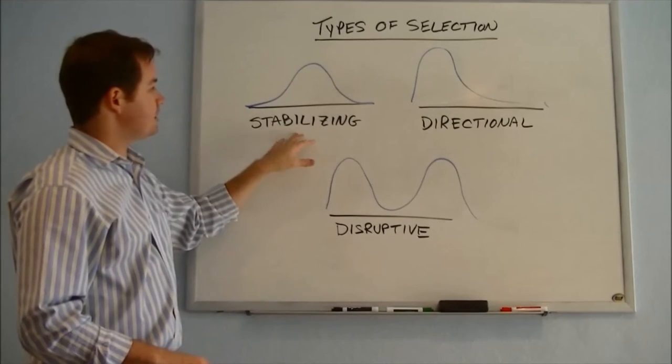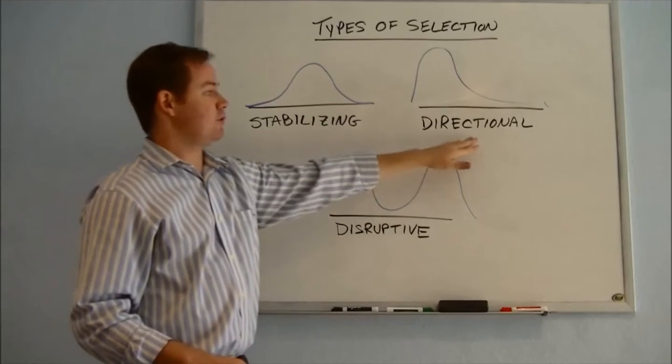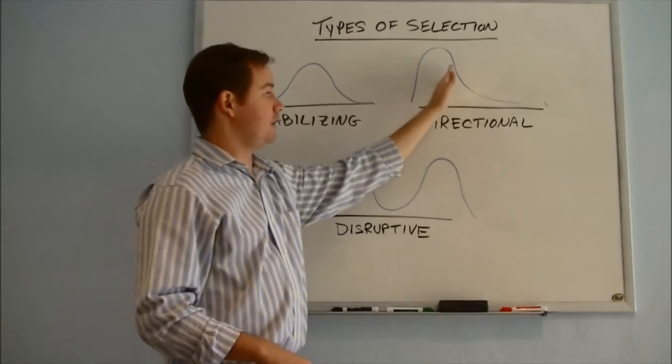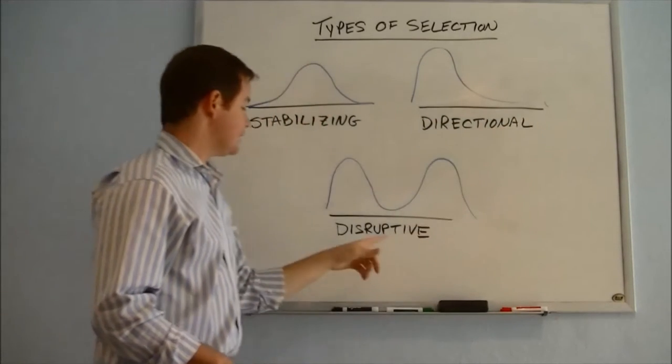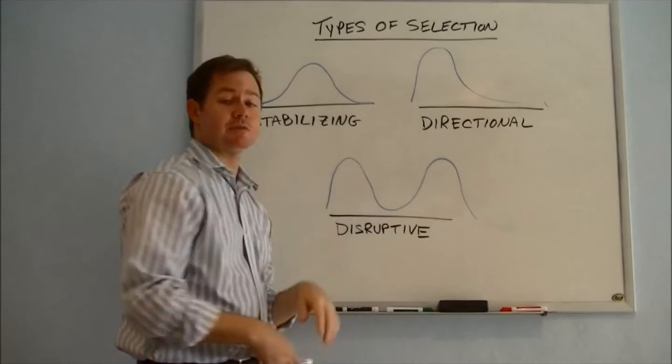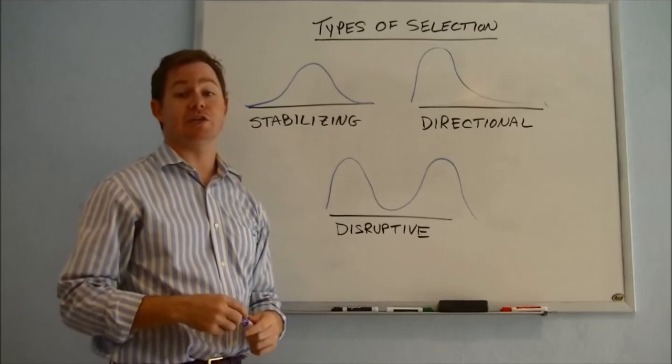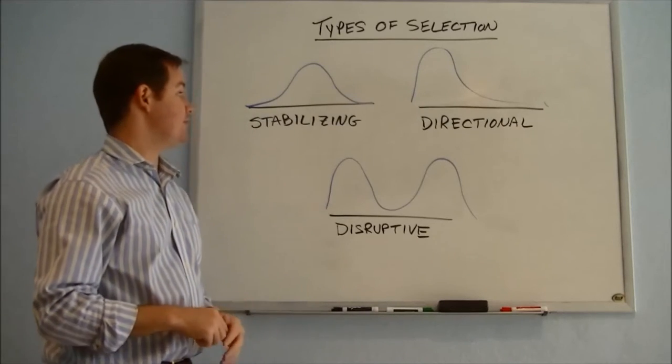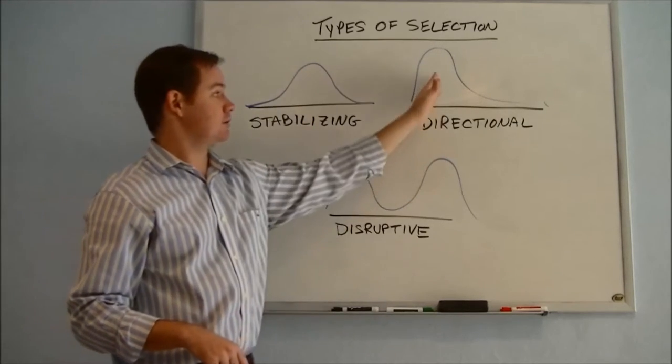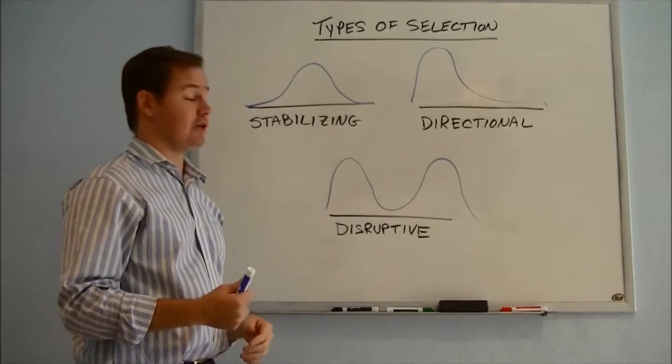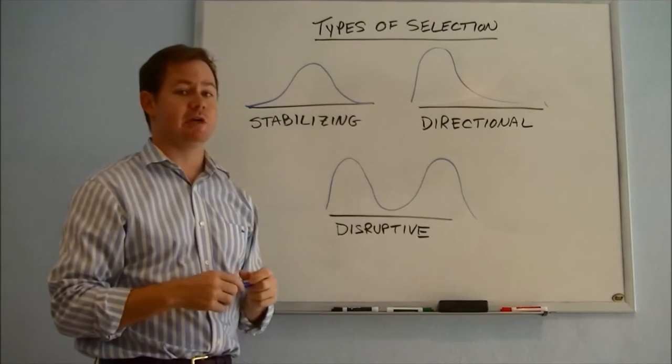So stabilizing selection favors the middle. Directional selection favors one of the extremes. And disruptive selection favors both extremes in terms of natural selection. And there are a variety of factors that can determine why something might be favored right in the middle or on one end versus the other, or even both ends at the same time.